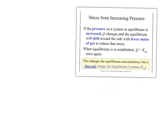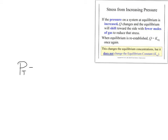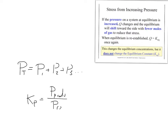We're going to start off talking about pressure. Pressure stress only applies to systems with gases, because solids, liquids, and aqueous things are not affected by pressure. In a sealed system, the total pressure equals the sum of the partial pressures of each gas. Kp equals the pressure of the products raised to their stoichiometric values over the pressure of the reactants. So if we change the total pressure, we change the partial pressures, and if we change the partial pressures, we are going to change this into a Q.